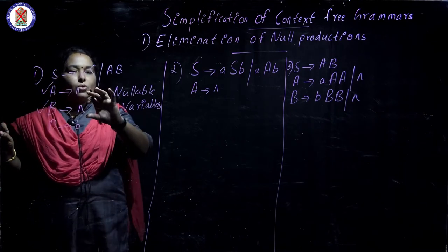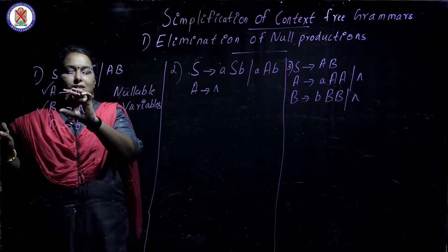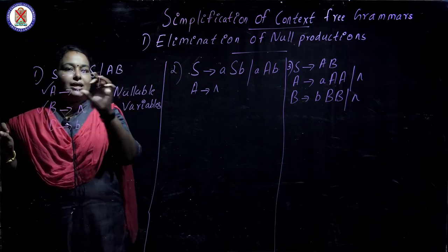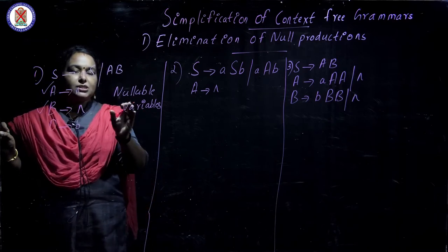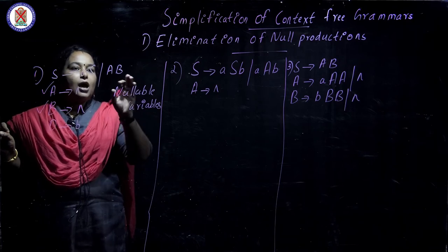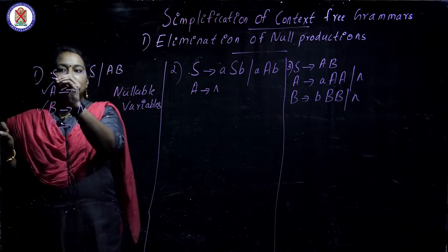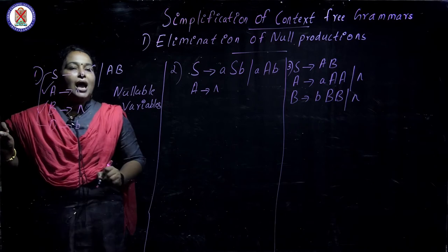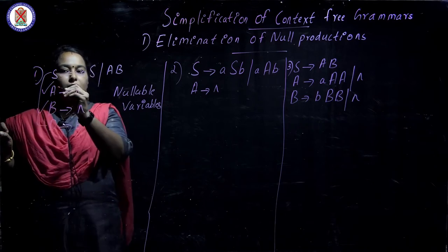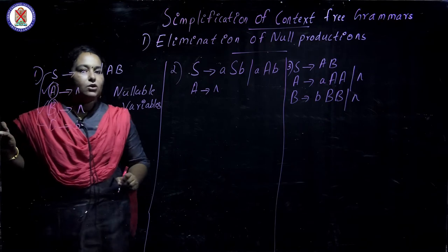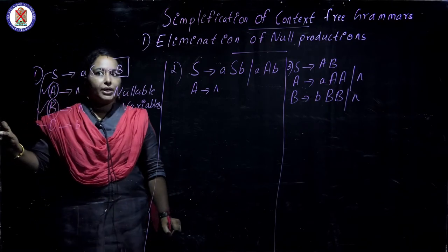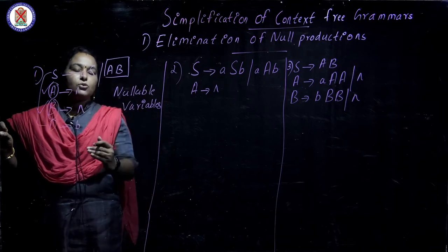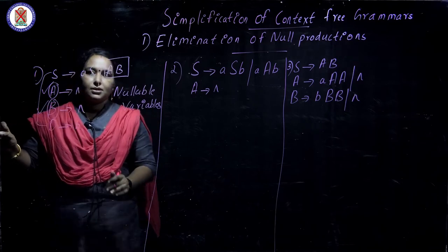Look at this grammar — which variables are nullable? A derives null, so A is a nullable variable. B derives null, so B is also a nullable variable. First we must recognize which variables are nullable variables. After that, we look into the remaining productions and find where A and B appear.